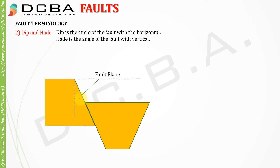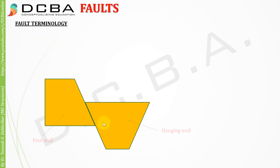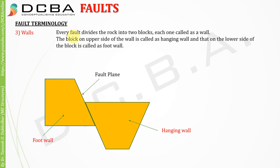Dip is the angle of the fault plane with respect to the horizontal plane, and head is the angle of the fault plane with respect to the vertical. Now, every fault divides the rock into two blocks, each called a wall. The block on the upper side of the fault plane is called the hanging wall, and the block on the lower side is called the foot wall.